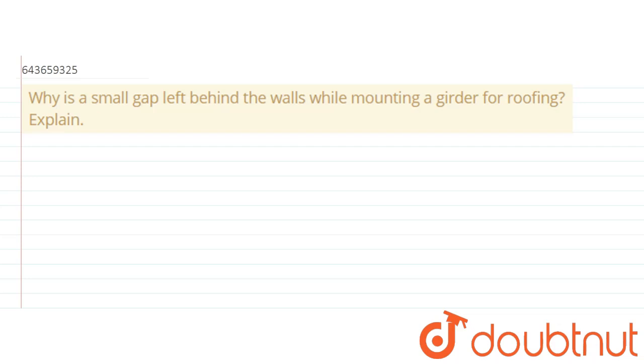The question says: Why is a small gap left behind the walls while mounting a girder for roofing? Explain.